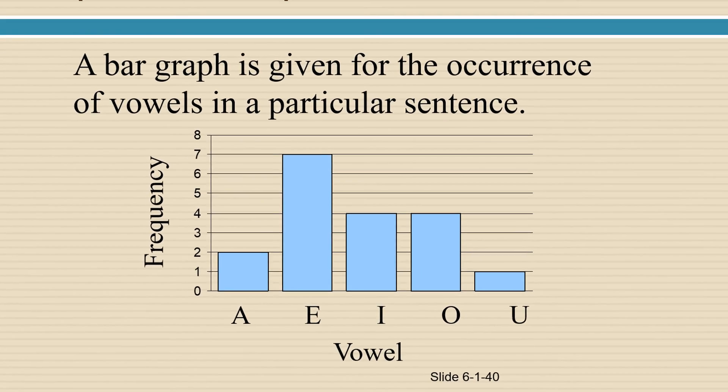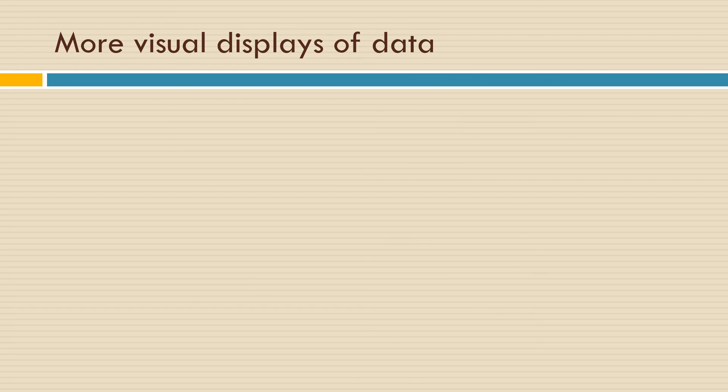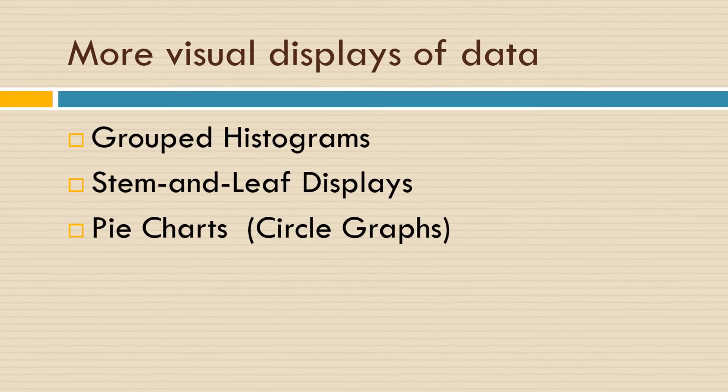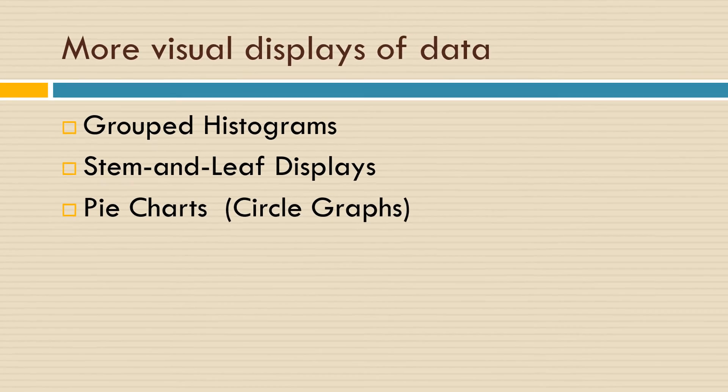Remember when you're doing your homework, if you're asked to create a bar graph, you have to have the spaces in between the rectangles. There are also other visual displays of data: grouped histograms, stem and leaf displays, and circle graphs. We're going to look at those in the next few videos. There are also links to these videos below.